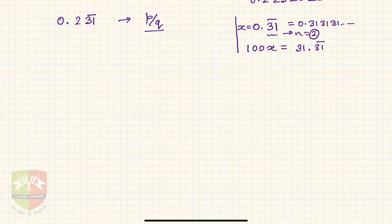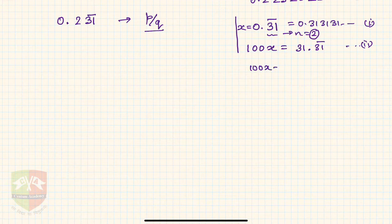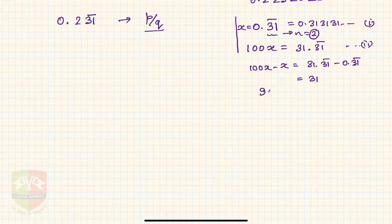We used to subtract the two equations: 100x minus x equals 31.31 bar minus 0.31 bar. We get 99x equals 31, and hence x equals 31 upon 99. That was easy to find out.